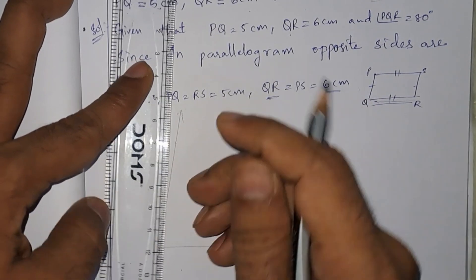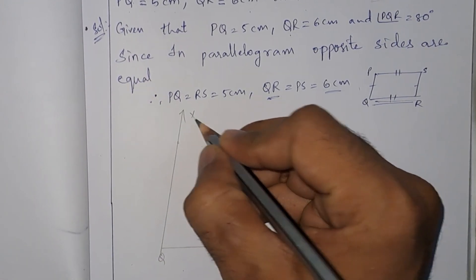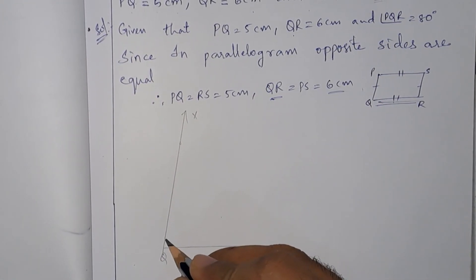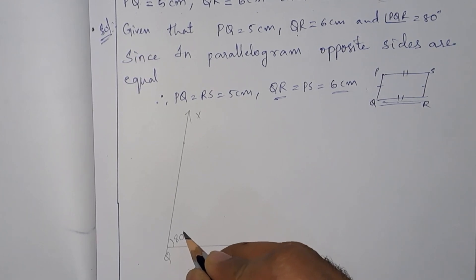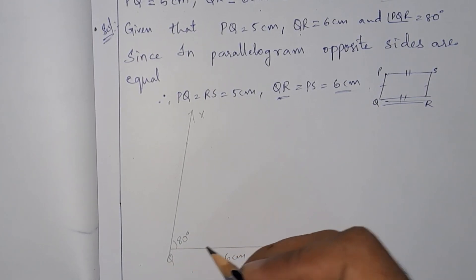So this is the ray for 80 degrees. Let this be X and we will mark the angle 80 degrees.